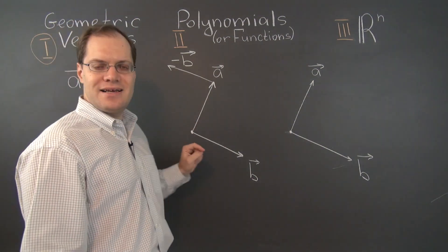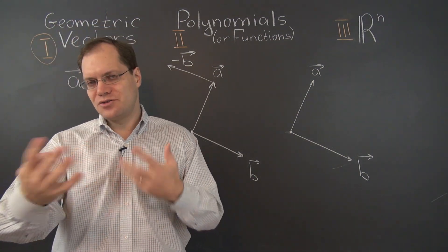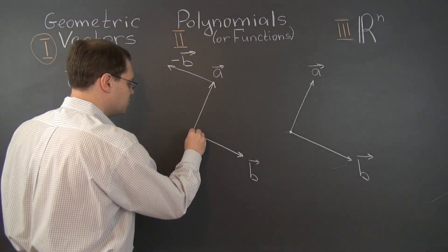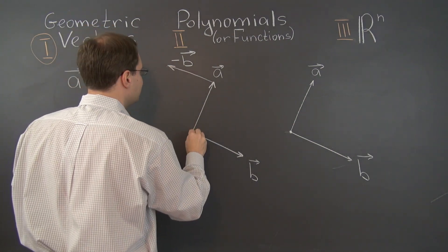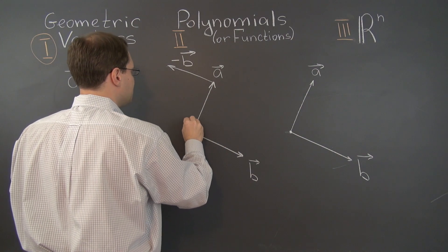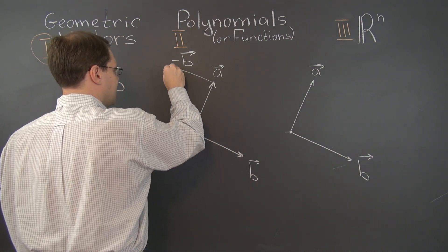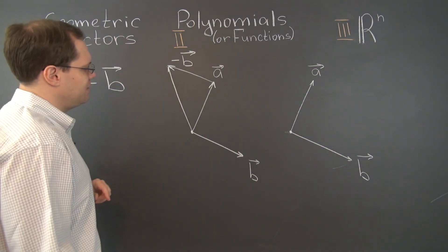And then you simply add minus B to A according to whichever rule you prefer. We're using tip-to-tail, so here it is. There was A minus B, excuse me, that was minus B, and here is A minus B right here.